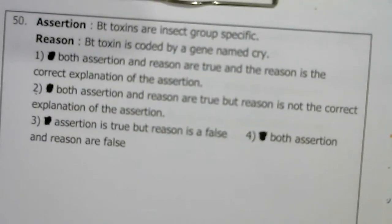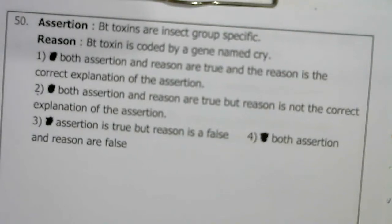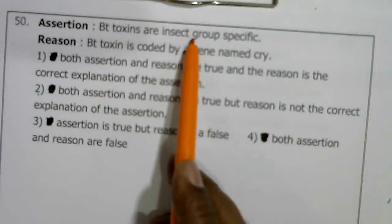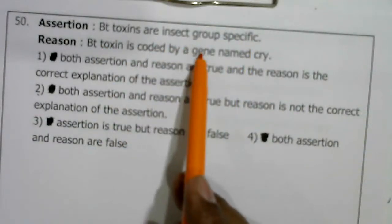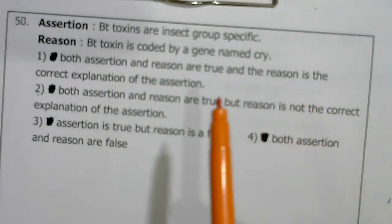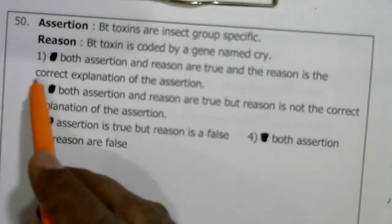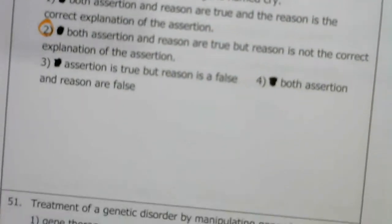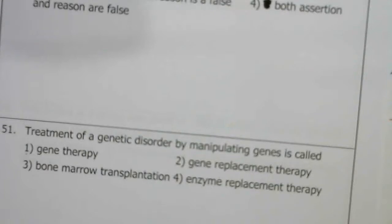Another assertion-reason: Bt toxins are insect-group specific; Bt toxin is coded by a gene named cry. The reason is correct but is not the correct explanation of the assertion. So the second option is right.